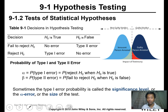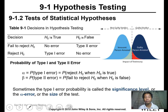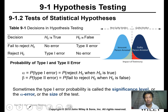Type 1 error is called alpha, the significance level, or the size of the test — the probability of rejecting the null hypothesis when it is true. Beta is the probability of Type 2 error, which is the probability of failing to reject the null hypothesis when it is false.